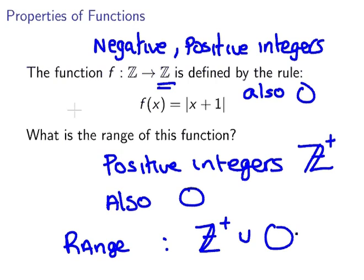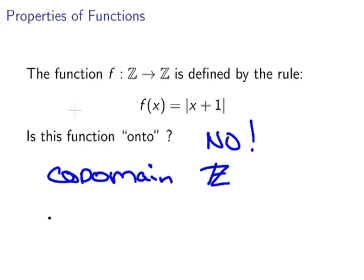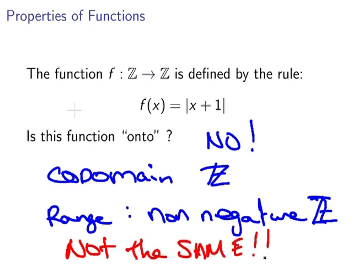Now, importantly, the range and the codomain are not the same. So is the function onto? No. Codomain is all integers, range is non-negative integers. Not the same. So the answer is, is the function onto? Well, the range and the codomain are not the same, so the answer is no.